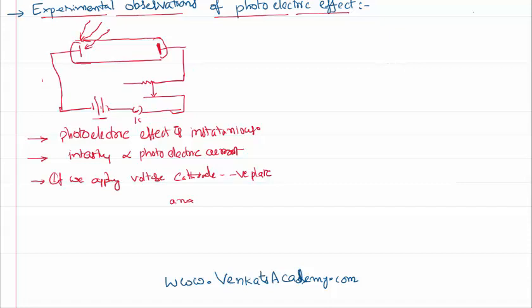It is noticed that with the increase in applied voltage in the forward direction — where the cathode is connected to the negative plate and the anode to the positive plate — the photoelectric current is also increasing.